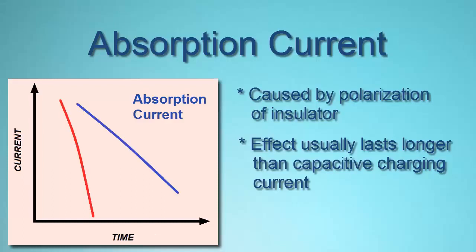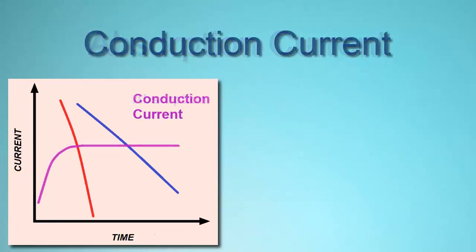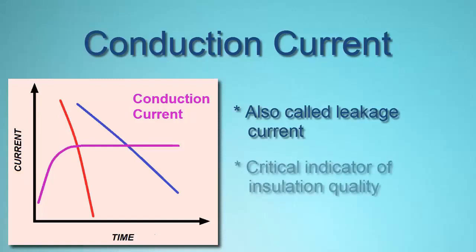The length of time it takes for absorption current to fall off can be affected by moisture or other contaminants in the insulation material. Therefore, absorption current is an important indicator of insulation integrity. Conduction current, often called leakage current, is the steady current present both through and over the insulation. This is a critical measurement, since an increase in conduction current over time is likely an indication of deteriorating or damaged insulation.